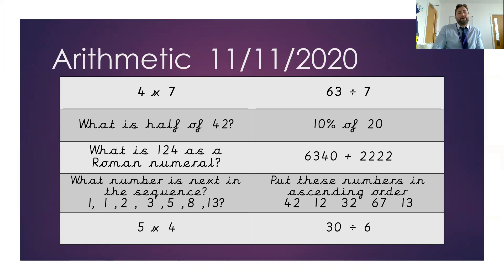The next day is 4 times 7. What is half of 42? What is 124 as a Roman numeral? Put the next number in that sequence. And for a bonus point, if you can tell me what that sequence is called. There's a special name for that sequence of numbers there. So if you can come and tell me what that special name is for that sequence, you'll get a bonus point.